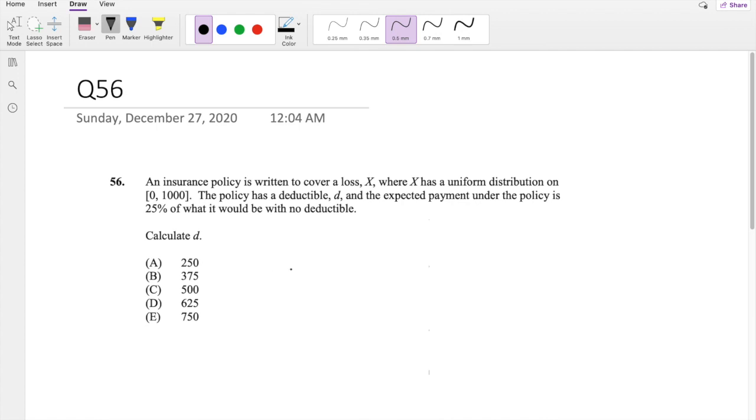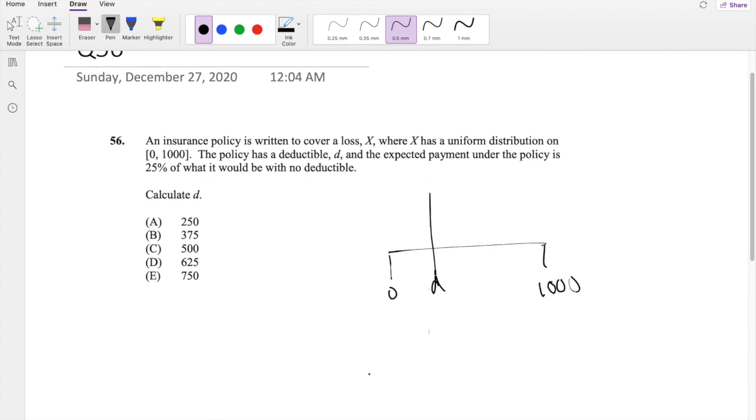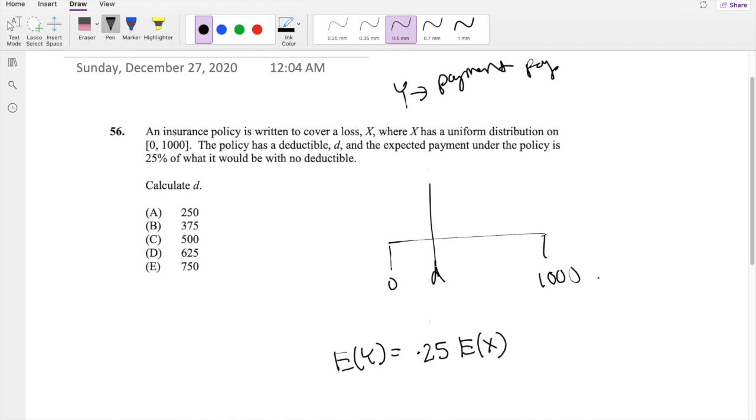So basically, this is a uniform distribution. X is a uniform distribution from 0 to 1000. And there is some kind of deductible D right here. The expected payment under the policy, let's say Y is the payment under the policy. The expected payment under the policy is 0.25% of what it would be normally, without any deductibles.